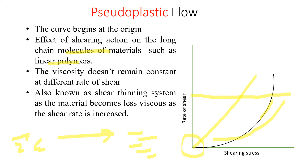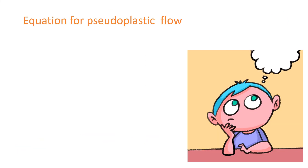Objective comparison between different pseudo plastic systems is more difficult than with either Newtonian or plastic systems. Newtonian systems are completely described by viscosity eta, while plastic systems are described by yield value and plastic viscosity U.